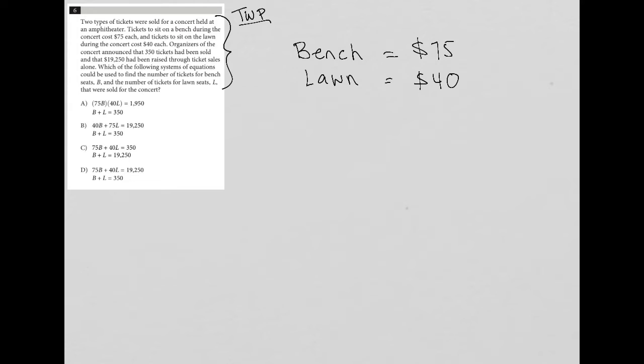That means they sold 350 tickets. Well, what types of tickets can be sold? We have bench tickets and lawn tickets. So I'm going to say, let's just say X equals bench and Y equals the number of lawn tickets. Therefore, I could say as a translation, X plus Y equals 350. The number of bench tickets plus the number of lawn tickets must equal 350.